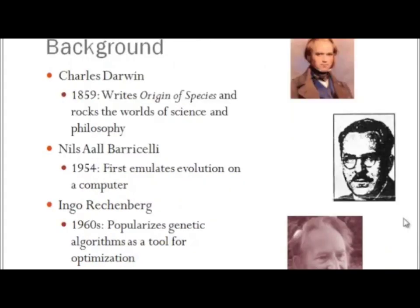In 1859, Charles Darwin wrote The Origin of Species, and about a hundred years later, Niels Aul Baracelli was the first to simulate evolution on a computer, to try to reproduce biological evolution, or something similar to it, on a computer.